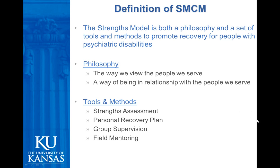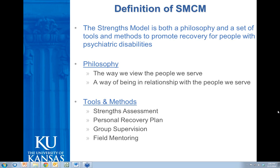So what is the strengths model of case management? The strengths model was developed in the mid-1980s as a response to traditional deficit-based approaches that have been prevalent in mental health for years. The model's focus is on meaningful and important goal achievement and then mobilizing people's strengths to achieve those goals. The model is both a philosophy of practice as well as a set of tools and methods designed to help enhance people's ability to recover and reclaim their lives.